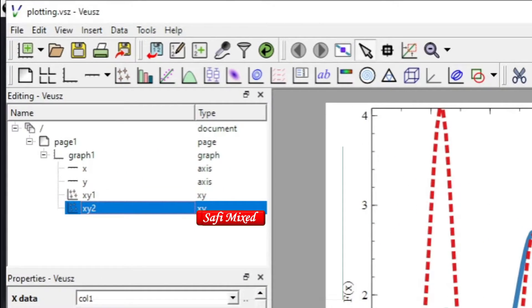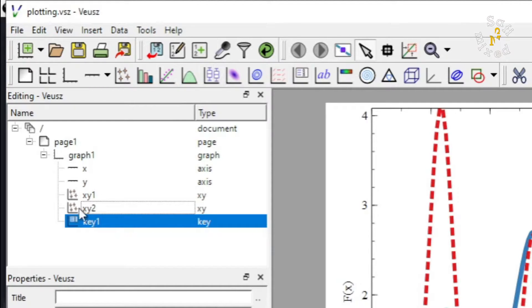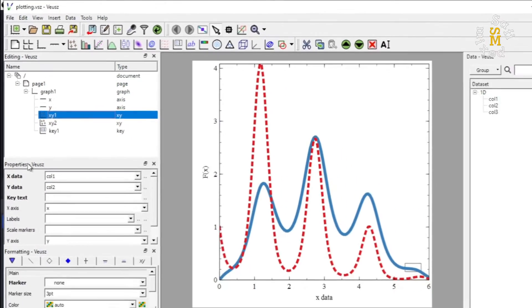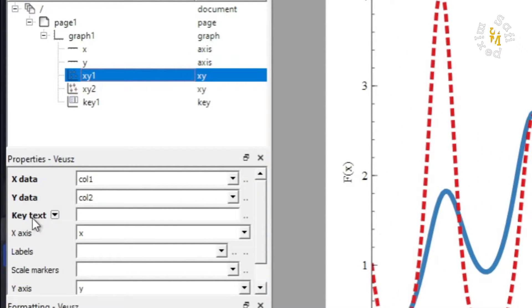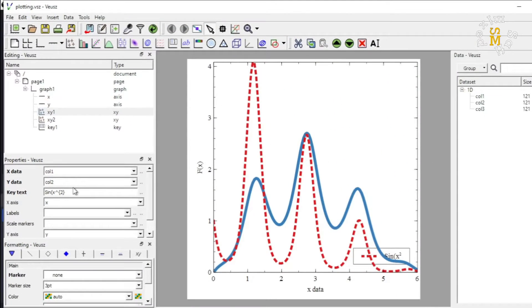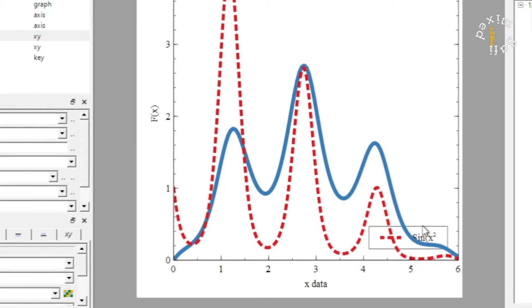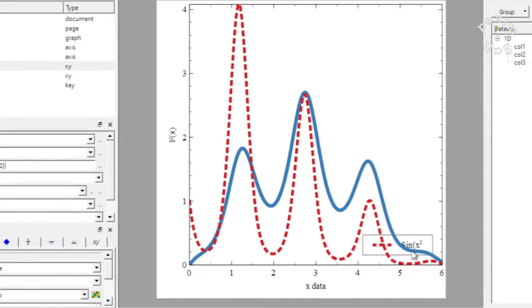In order to add legends to plots, you will come here to plot key. Clicking on this tab, a key would be added over here. Then clicking on the XY point in the properties window, you see a tab added as key text. I want to add additional information about this plot in this key text slot. For example, I want to write here sine of x squared. As I entered this, a key would appear somewhere in the plot region, and presently it is appearing here in the right bottom corner of the plot.